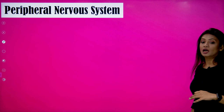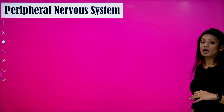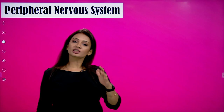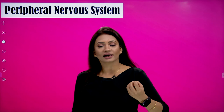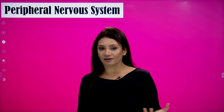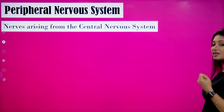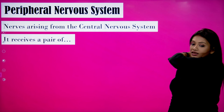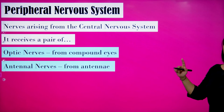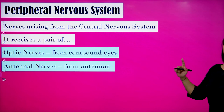Moving on to the peripheral nervous system — this comprises the nerves arising from the central nervous system dealing with voluntary activities. It receives a pair of optic nerves from the compound eyes for vision, and antennal nerves from the antennae.